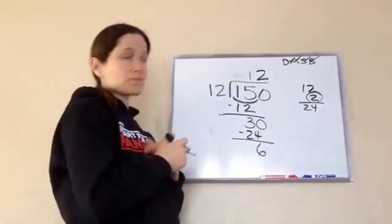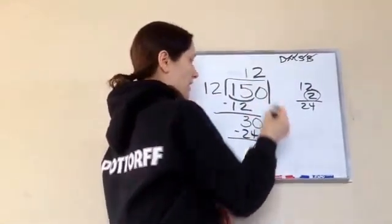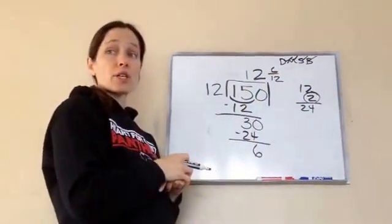Am I done? Then it's 6 over 12. Very good. Because I'm done with this part, and I have my 6, so I'm going to put 6 twelfths.